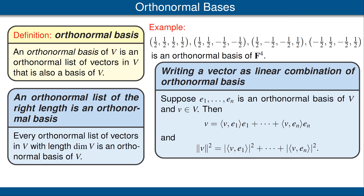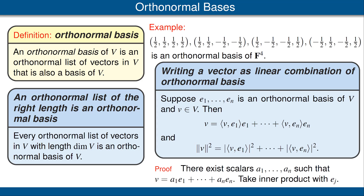If e_1 up to e_n is an orthonormal basis of V and v is a vector in V, then v equals the sum where the coefficient of e_j is the inner product of v with e_j. We also have a formula for the norm squared of v: it equals the sum of the squares of the absolute values of those coefficients. To prove the coefficient formula: since we have a basis, write v as a_1 e_1 plus ... plus a_n e_n, then take the inner product of both sides with e_j on the right. The left side gives v inner product e_j, and the right side gives just a_j, completing the proof.